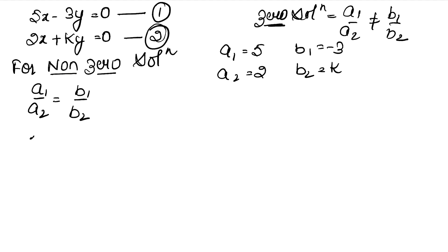So, 5 upon 2 equals minus 3 upon K. Cross multiply, 5K equals minus 3 into 2, so 5K equals minus 6. So K is minus 6 upon 5.